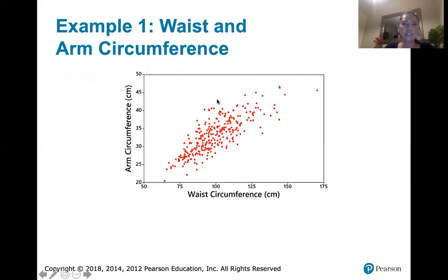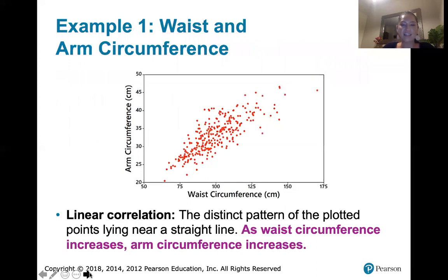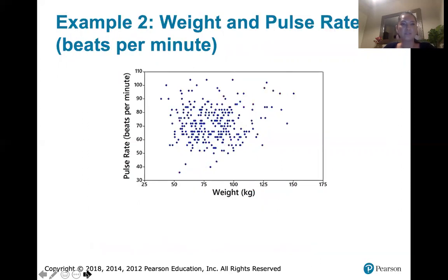Here's that same example as before — waist and arm circumference. The question is: is there a linear correlation? We would say yes, there is a distinct pattern. Those points lie near a straight line, and as waist circumference increases, arm circumference increases. So there appears to be a linear correlation.